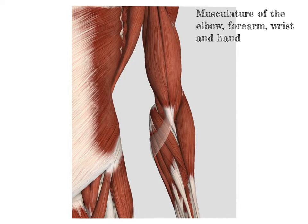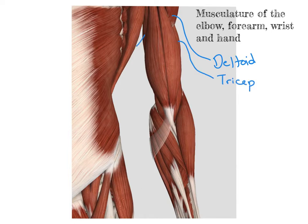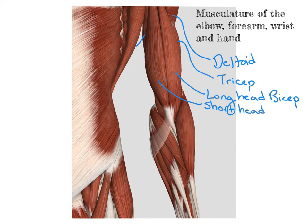Starting at the proximal aspect, we can see the deltoid on the anterior side coming down from the shoulder. Also from the anterior side, we can see the triceps on the posterior side, both on the medial and the lateral aspect. We can see the long head of the bicep, which is on the lateral side and runs through the bicipital groove, as well as the short head that's on the medial side and attaches to the coracoid process.